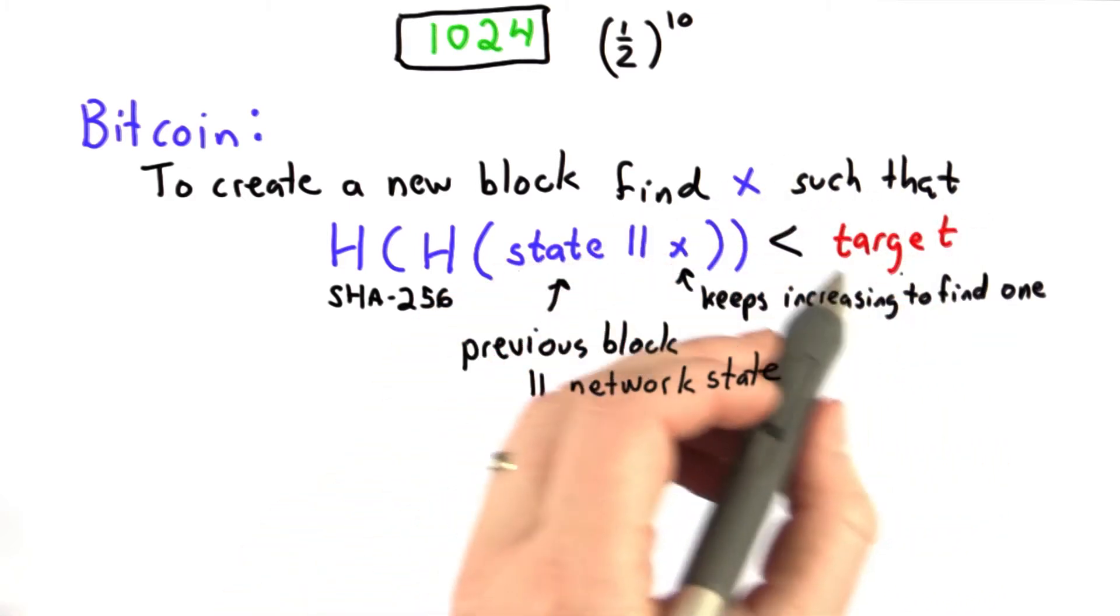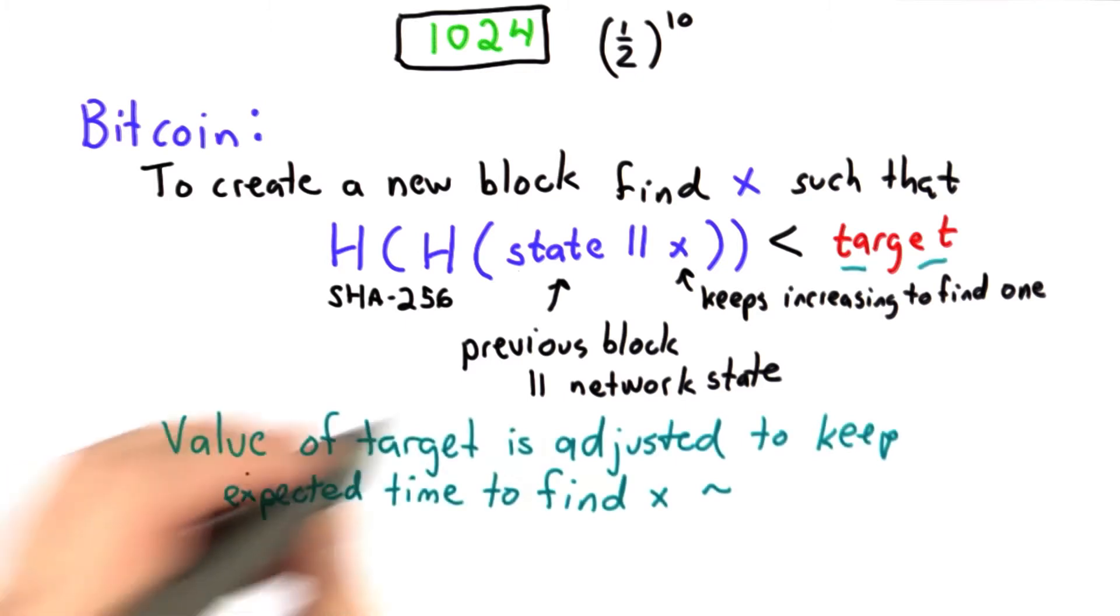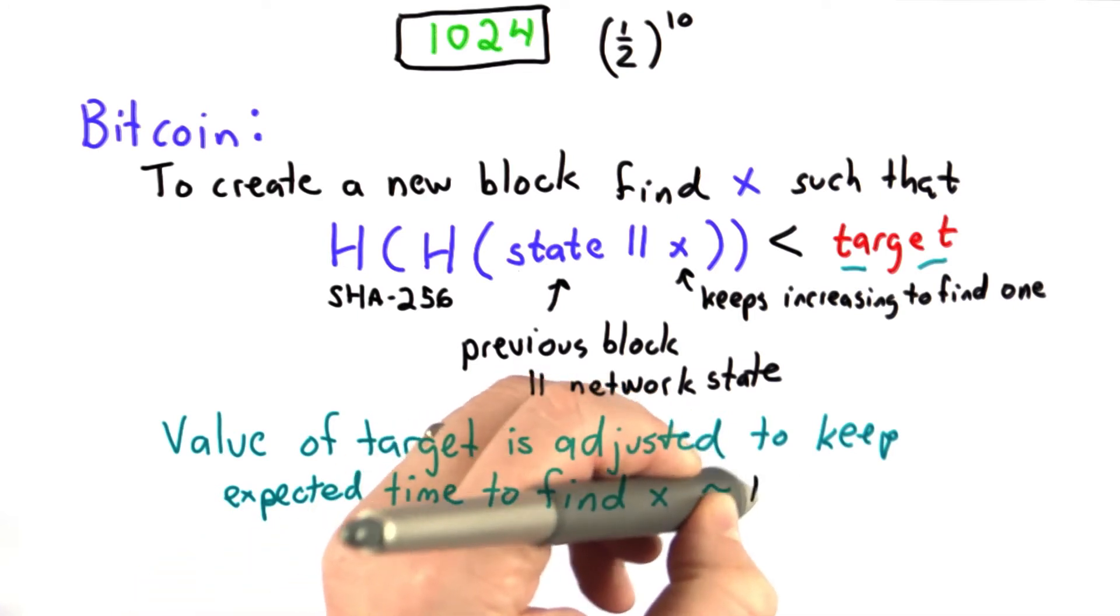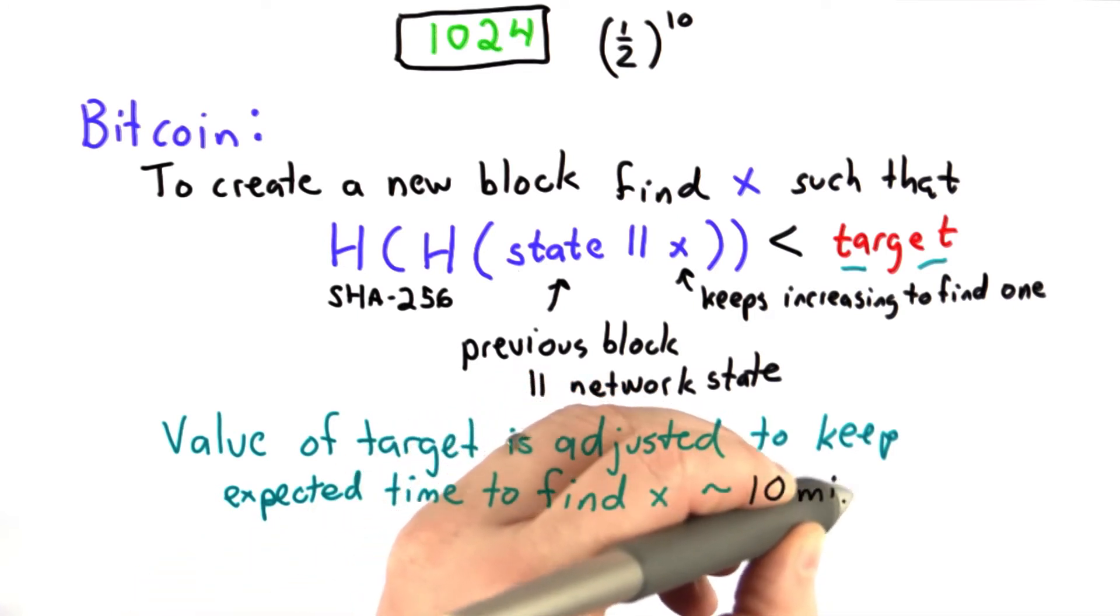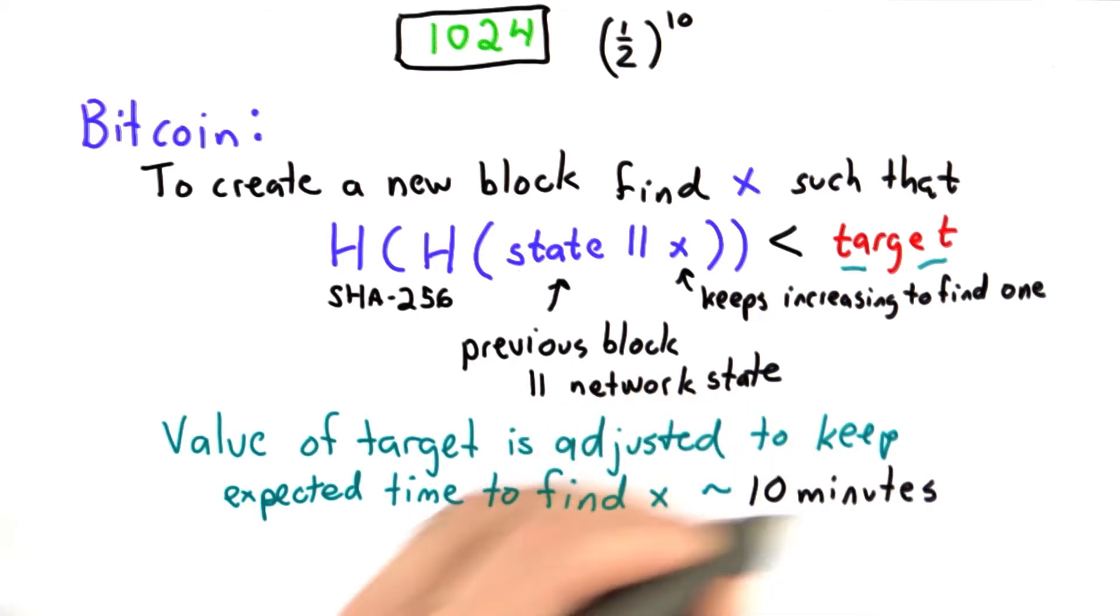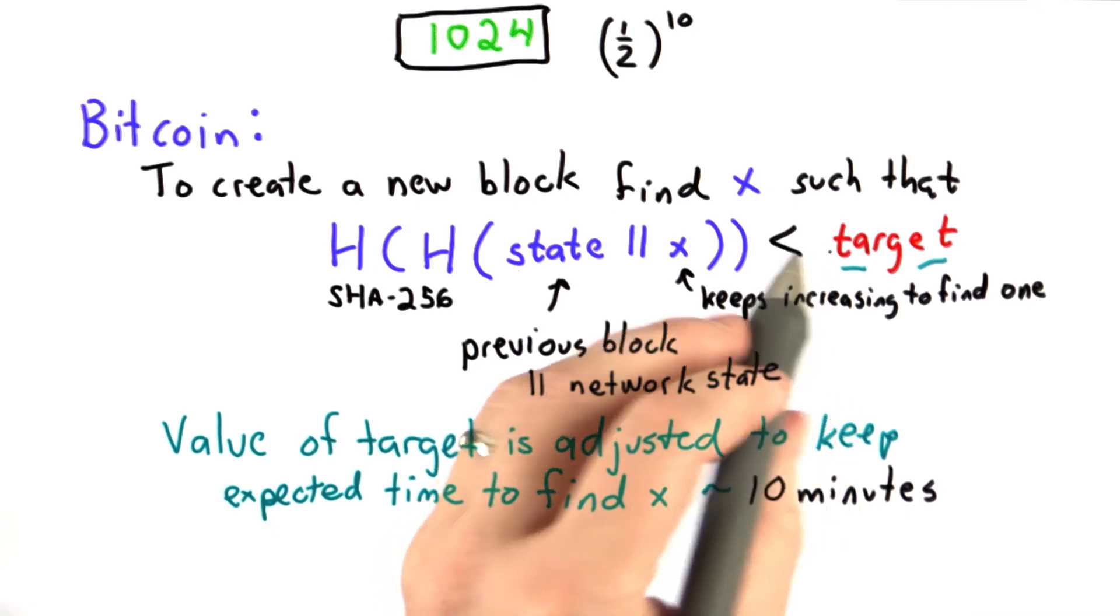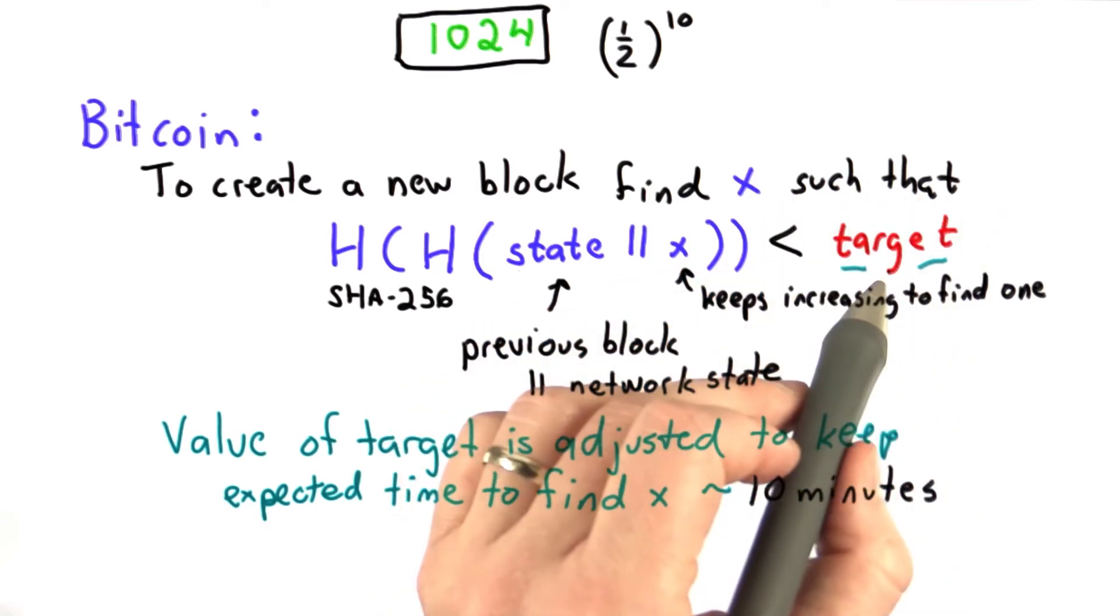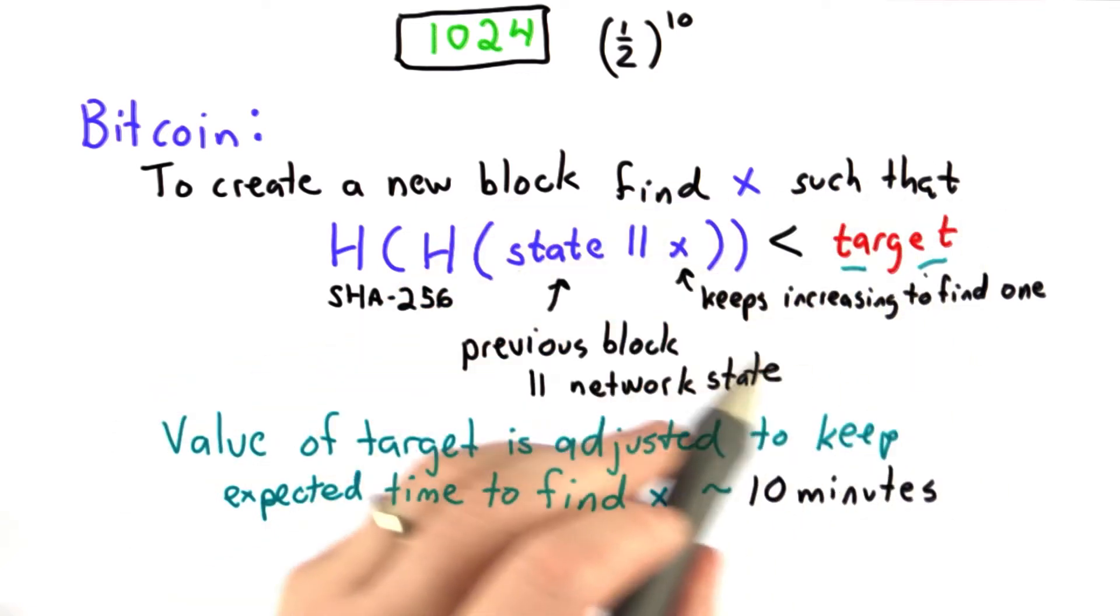And the value of the target controls how hard it is to find. The way the Bitcoin currency is designed to work is this value of the target is adjusted in a way that makes the time to find x keep about 10 minutes. That's the time for the whole network to find the next value. So that value of the target will keep decreasing as the computing power in the network increases.